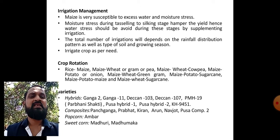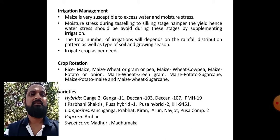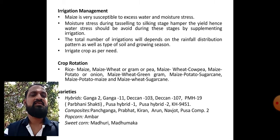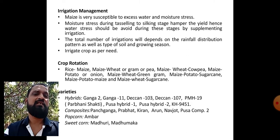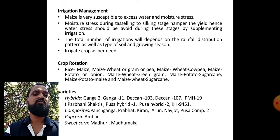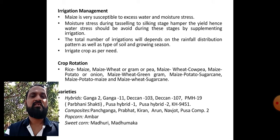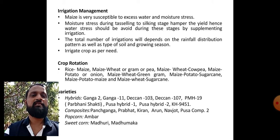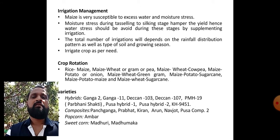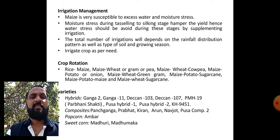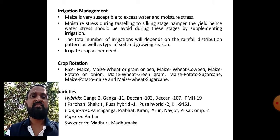Crop rotation: maize-rice, then maize-wheat or gram or pea; maize-cowpea, then maize-potato-onion; maize-green gram; maize-potato-sugarcane; maize-wheat-sugarcane. These types of crop rotations are followed.